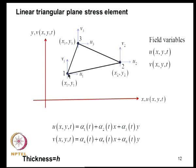The linear triangular element is characterized by 3 nodes (1, 2, 3) with coordinates (X1,Y1), (X2,Y2), (X3,Y3). U is displacement along X and V along Y. The displacement field varies within the element as functions of X, Y, and time T. We postulate that the displacement field can be approximated as a linear function of X and Y: U = alpha_1 + alpha_2*X + alpha_3*Y, where alpha_1, alpha_2, alpha_3 are generalized coordinates that are functions of time. Note that from this slide onward the element thickness is denoted H.